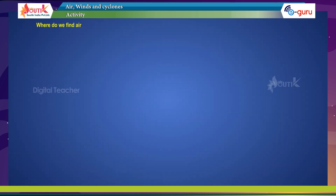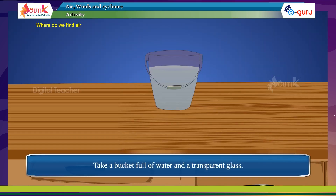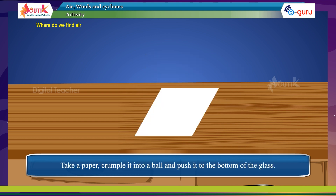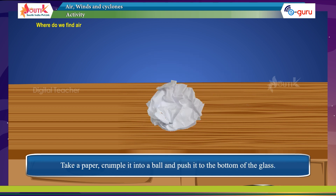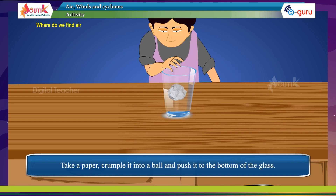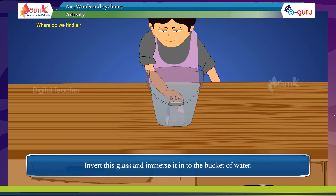Activity: Where do we find air? Take a bucket full of water and a transparent glass. Take a paper, crumple it into a ball, and push it to the bottom of the glass. Invert this glass and immerse it into the bucket of water.